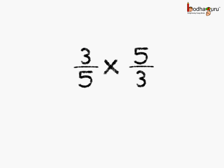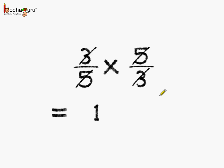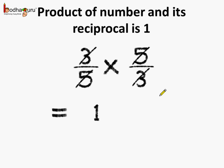So what happens if we multiply the fraction by its reciprocal? We take 3 by 5 multiplied by 5 by 3 — 3 gets cut, 5 gets cut, so the answer is 1. This means the product of a number and its reciprocal is 1. Even in the case of a whole number it stands true — if we multiply 3 by its reciprocal 1 by 3, it becomes 1. So remember: the product of a number and its reciprocal is always 1.